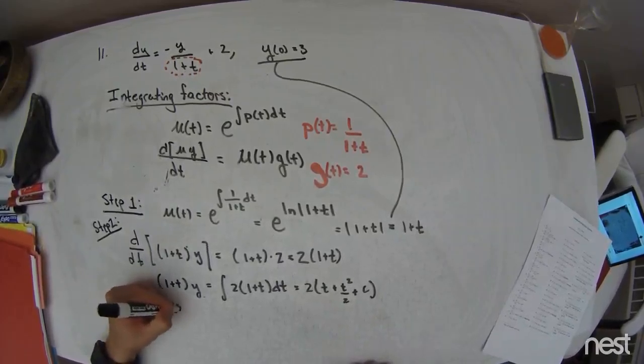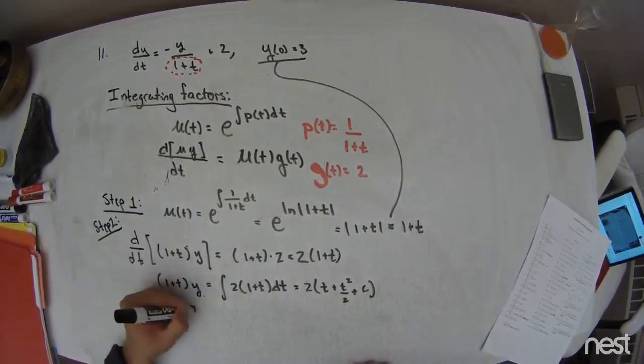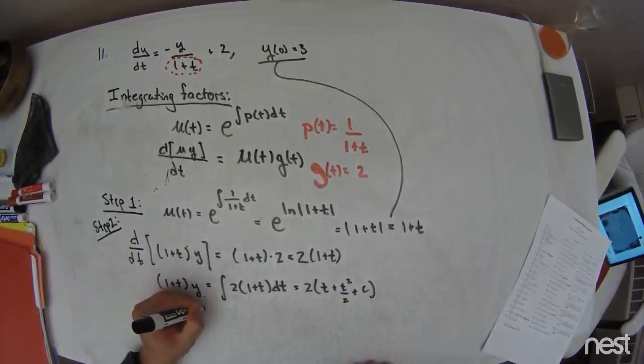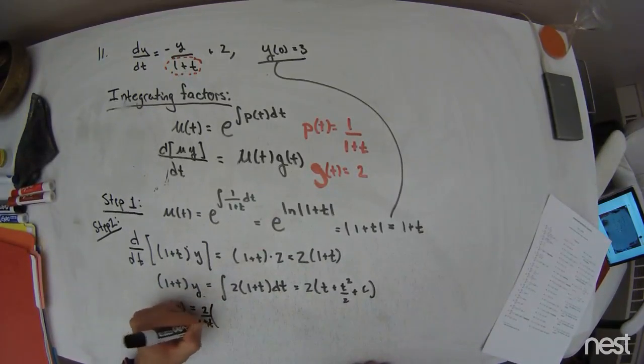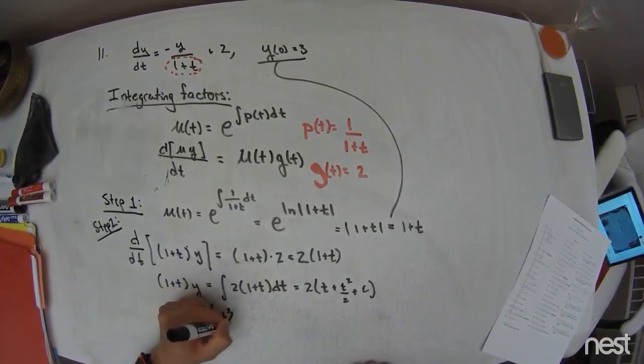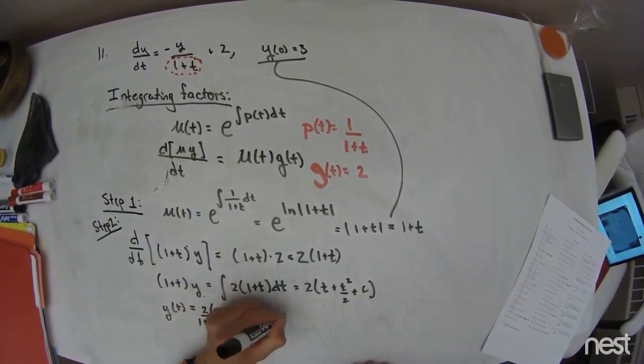Alright, so y of t, after I divide through by 1 plus t, is equal to 2 over 1 plus t times t squared over 2 plus t plus c.